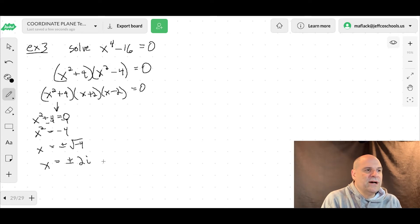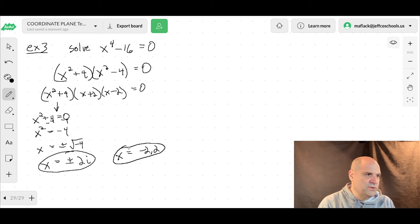Here's our complex roots. So you have positive or negative 2i, but you also have your real roots, x equals negative 2 and positive 2. So it's good to keep these separate. I mean, you could say that the roots are just positive and negative 2i, negative 2, and then positive 2. But it's always good to keep the imaginary separate from reality. It's a good rule in life, too. So that's example 3.